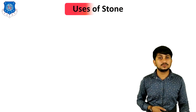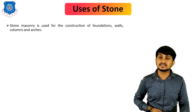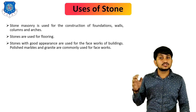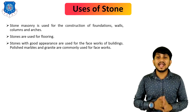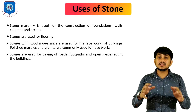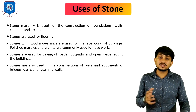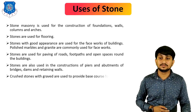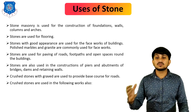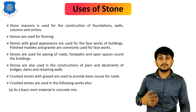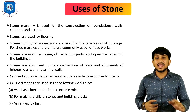Now let's see the uses of stone. Stone masonry is used for the construction of foundations, walls, columns, and arches. Stones are also used for flooring. Stones with good appearance are used for face work of buildings — polished marble and granite are commonly used for this. Stones are used for paving roads, footpaths, and open spaces. They are used in construction of piers, abutments of bridges, dams, and retaining walls. Crushed stones are used as base course for roads, as aggregate in concrete mix, and as railway ballast.